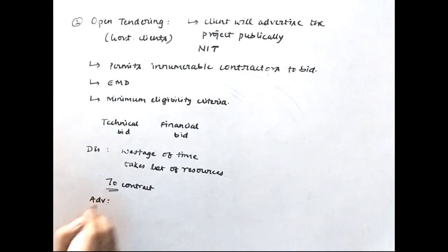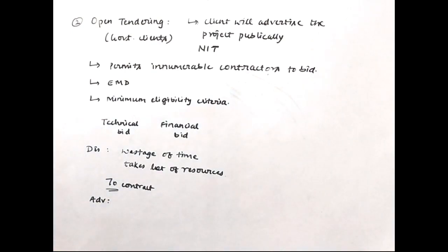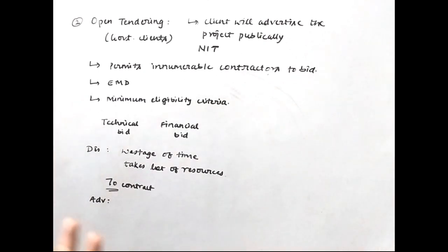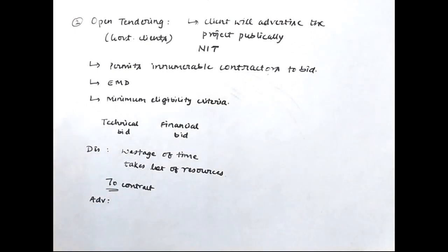If contractors win by chance without having properly worked out their rates, there will be many conflicts between them and the client. This is a very important disadvantage of open tendering. The advantages, however, are that the client gets a large pool of contracting agencies and can choose the best. New agencies with good prices can come into picture that the client has not interacted with before. Genuinely low prices can also emerge from the competition.